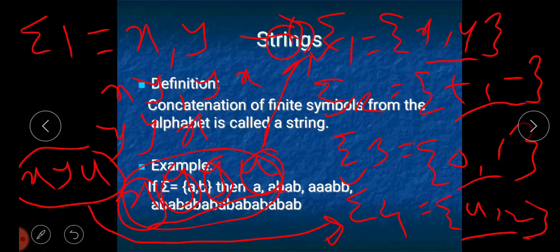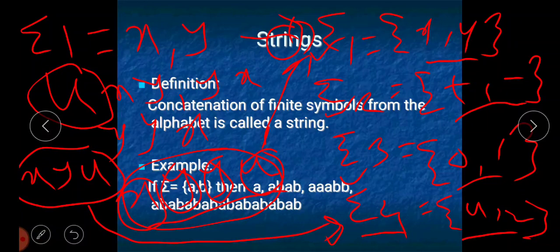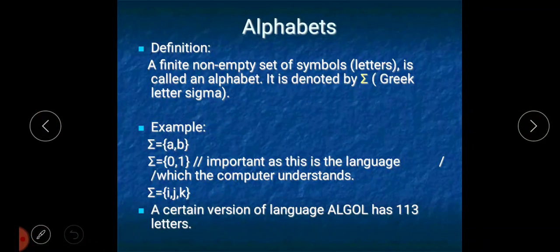But if I take just u alone, then u is a valid string defined on alphabet4, because the only symbol taken is u, and u is a member of alphabet4. So u alone is a valid string defined on alphabet4.